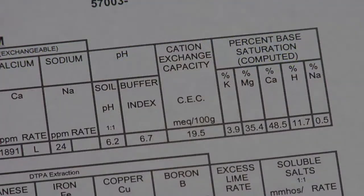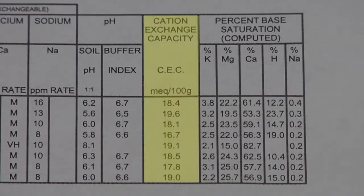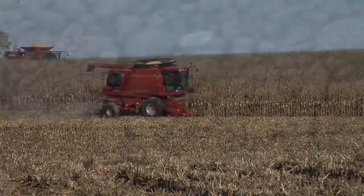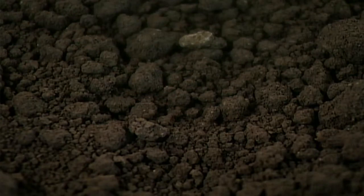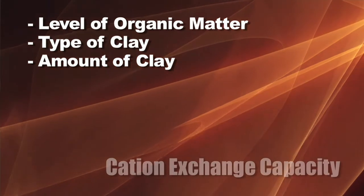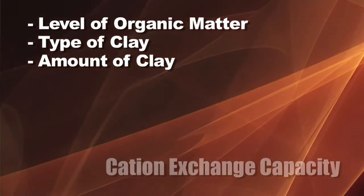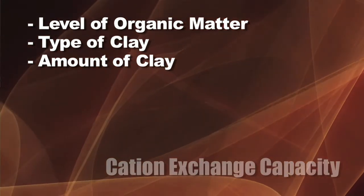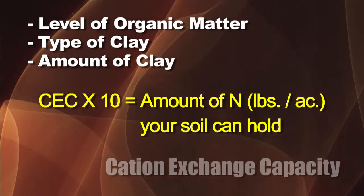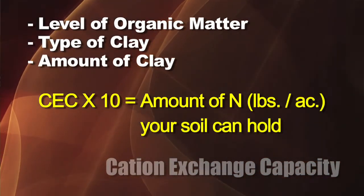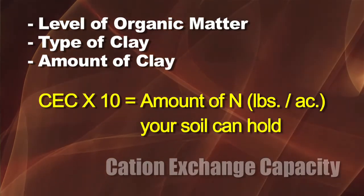Cation exchange capacity (CEC) is a critical topic, especially as we're striving for higher corn yields. CEC tells you the basic holding capacity of your soil — it's a measurement of organic matter level, the type of clay, and the amount of clay in your soil. A quick rule of thumb: take your CEC times 10 and that gives you a rough idea of how much nitrogen your soil can hold at any one time.